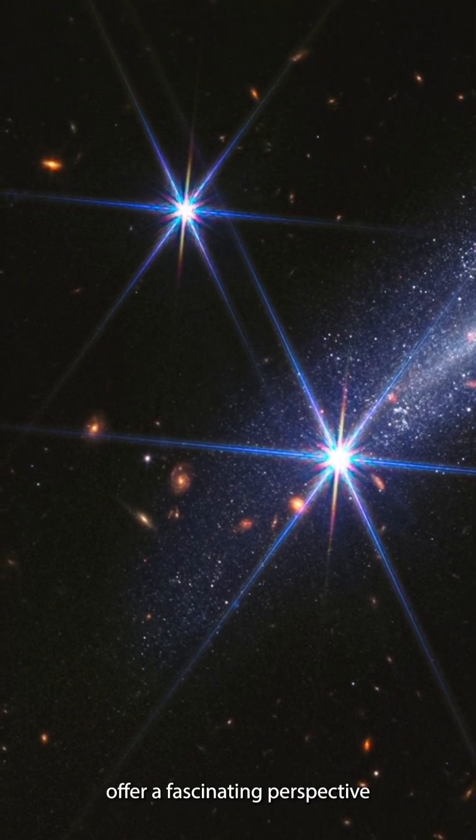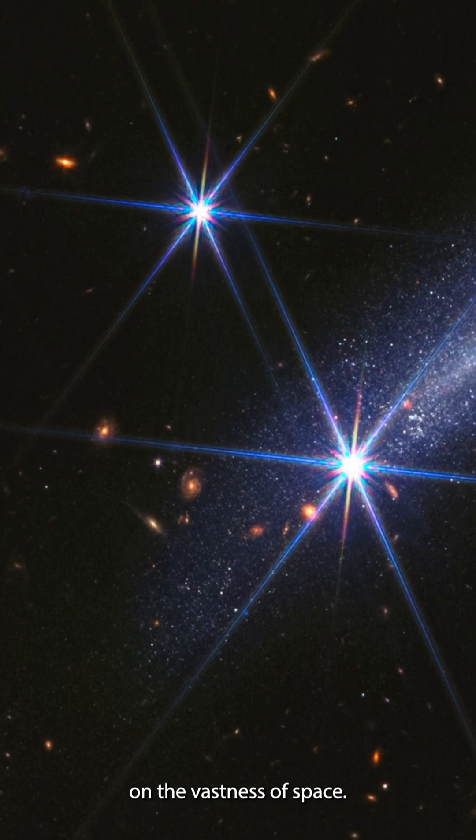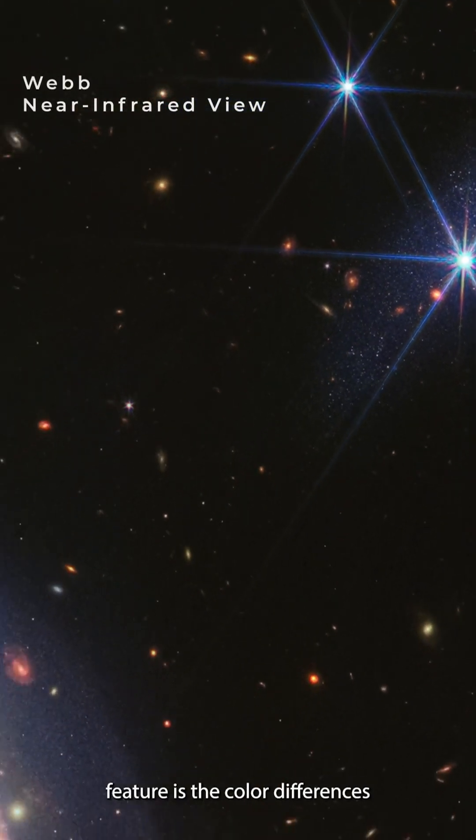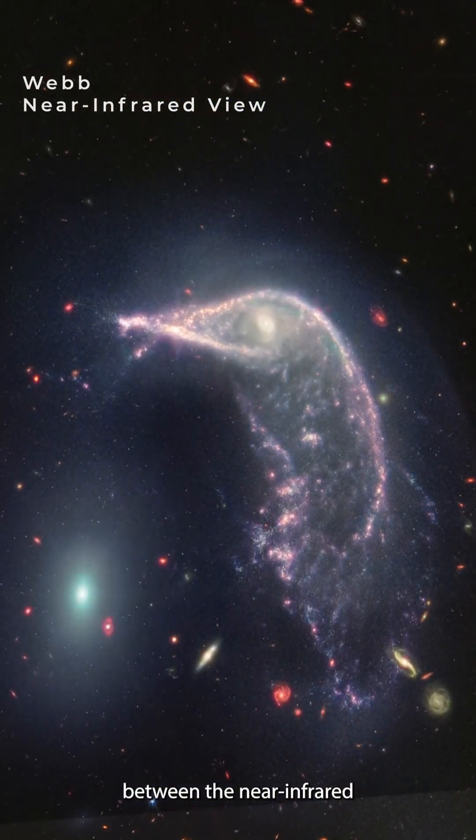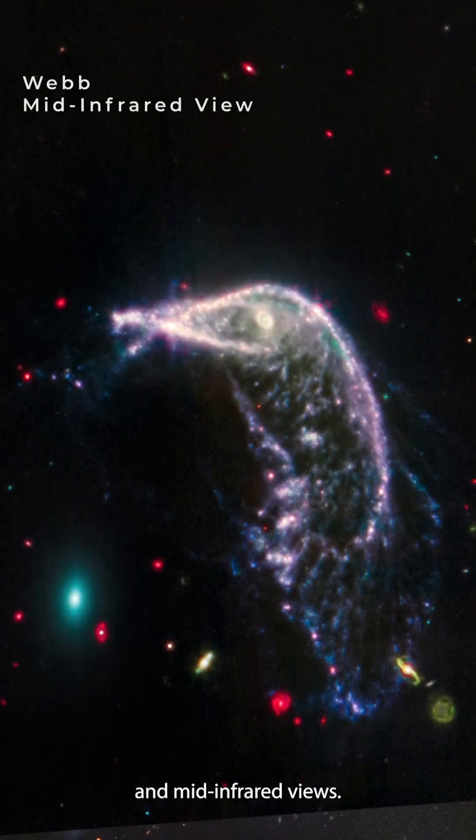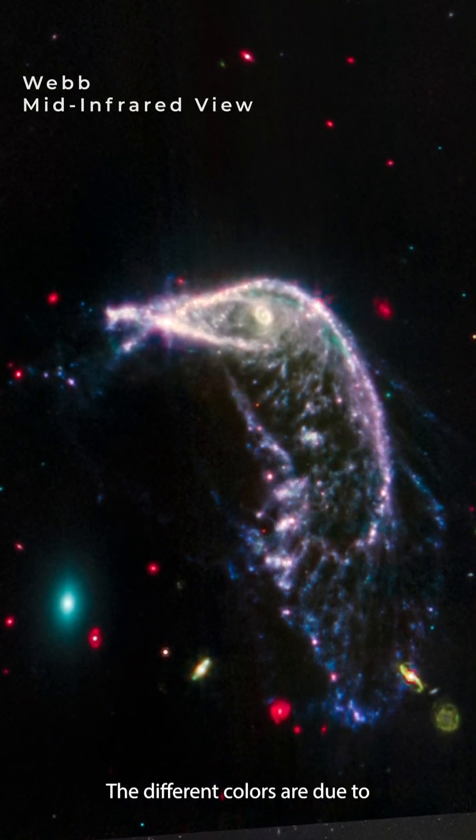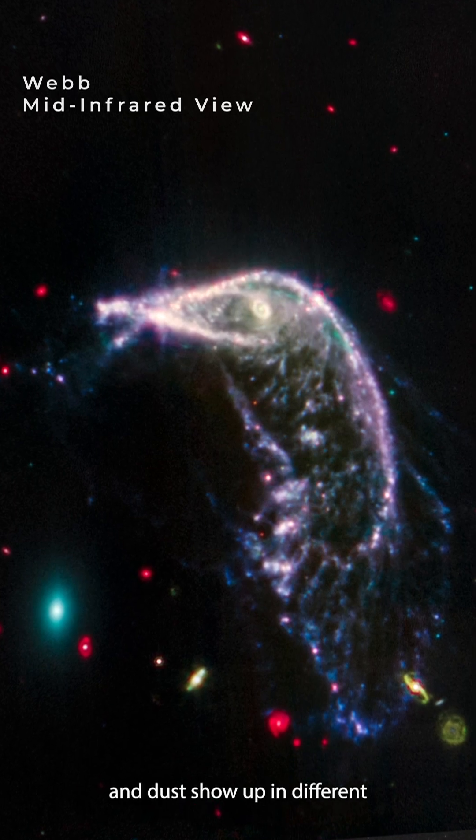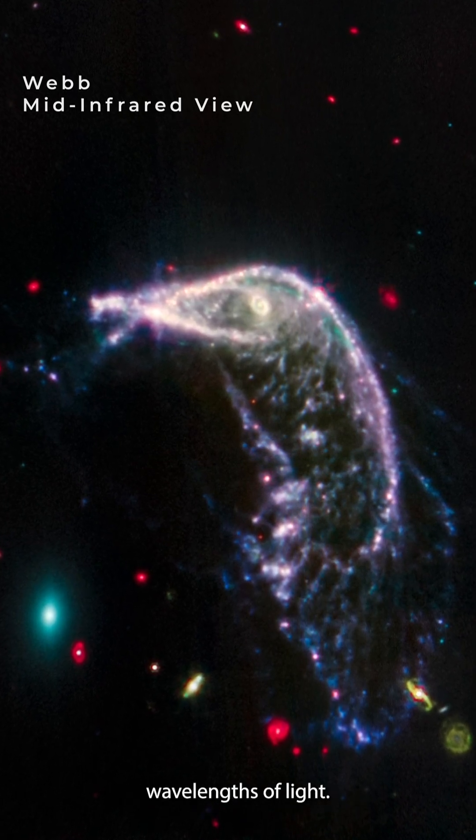These objects offer a fascinating perspective on the vastness of space. Another noticeable feature is the color differences between the near-infrared and mid-infrared views. The different colors are due to how different combinations of distance and dust show up in different wavelengths of light.